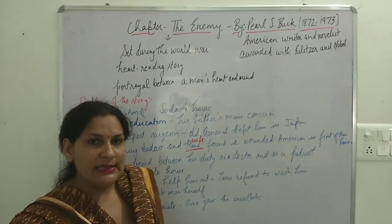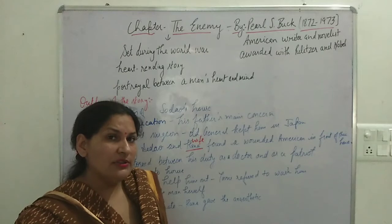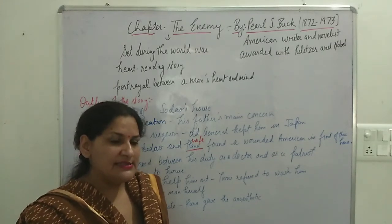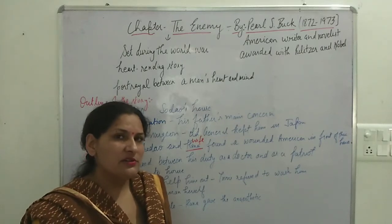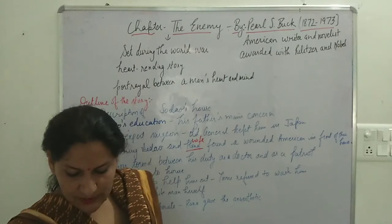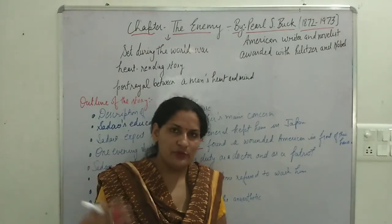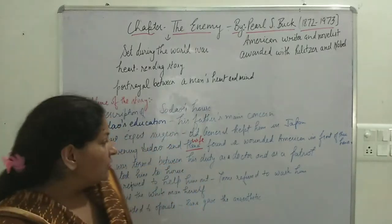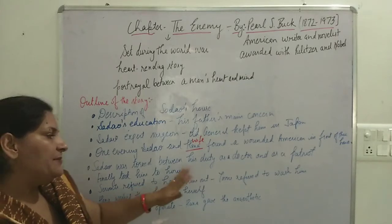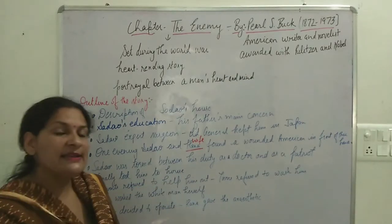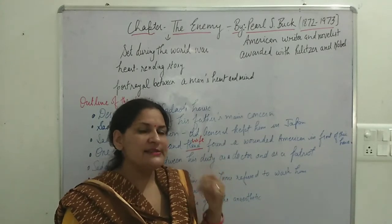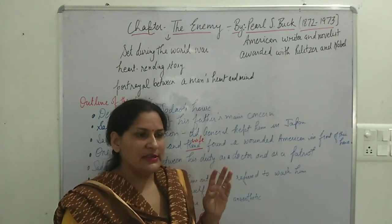They saw that the wound was bleeding. Sadao first filled the wound with sea moss to stop the bleeding. But they realized his wound and his body needed to be properly cleaned. They took him to the house, but the servants refused to help. There were three servants in the house — a cook, a gardener, and Yumi, who looked after the children.